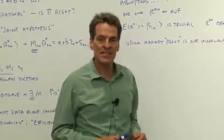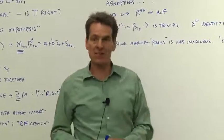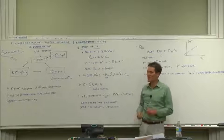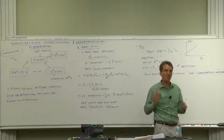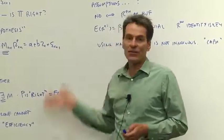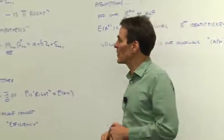Fama already proved a theorem in 1970 called the joint hypothesis theorem. He said any test of efficiency is a joint hypothesis with a model of market equilibrium. Let me translate that into modern notation, into the concepts we've used a couple different ways.